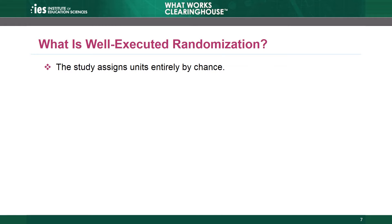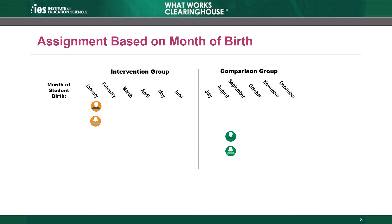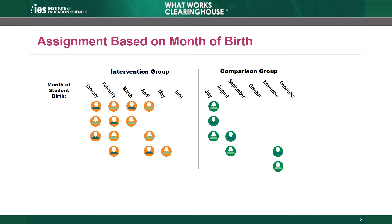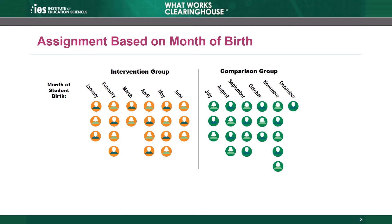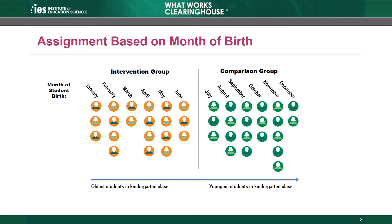Other random assignment processes include those based on lotteries and random numbers generated by computers. However, some approaches that might seem random may not actually be fully random. For example, a study might assign students with birthdays in January to June to the intervention group and July to December to the comparison group. The WWC does not consider this well-executed random assignment, because research indicates that people with the same birthday may share similar characteristics — especially true for young children. Using month of birth in a kindergarten class might result in an intervention group with relatively older students, who might perform better on outcomes because they are older, not because they received the intervention.